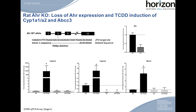We also generated a knockout for the AHR gene. Using ZFNs to target exon 2, we identified a founder rat with a 760 base pair deletion spanning intron 1 and exon 2. These rats have a loss of AHR gene expression, and when treated with a known AHR agonist, TCDD, we observed loss of TCDD induction of CYP1A1, CYP1A2, and the transporter ABCC3 (MRP3), when comparing the knockout to wild-type rats. In addition, as seen with other nuclear receptors PXR and CAR, we observed reduced endogenous gene expression levels of P450 gene CYP1B2 in the AHR knockout.